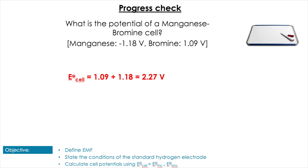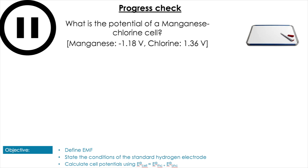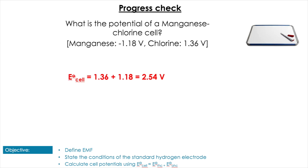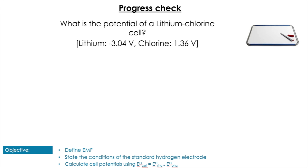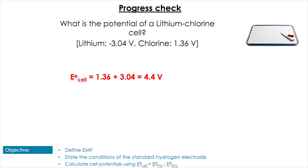For the manganese-bromine cell, you flip the sign of manganese to get 1.09 plus 1.18, which equals 2.27 volts. Next, the manganese-chlorine cell: flipping your most negative value for oxidation and adding them together gives 2.54 volts. Finally, the lithium-chlorine cell: lithium is your most negative, so flip the sign for oxidation, giving a total of 4.4 volts when added together.